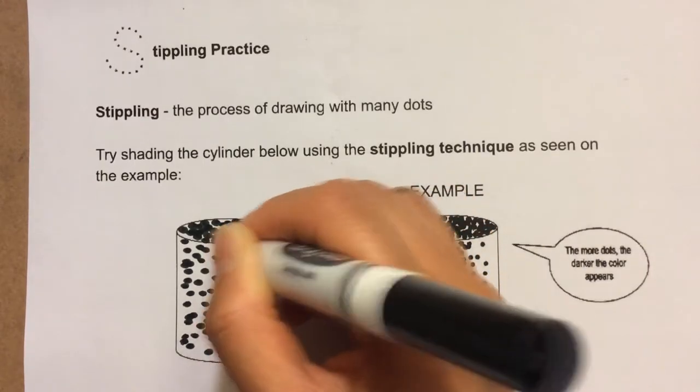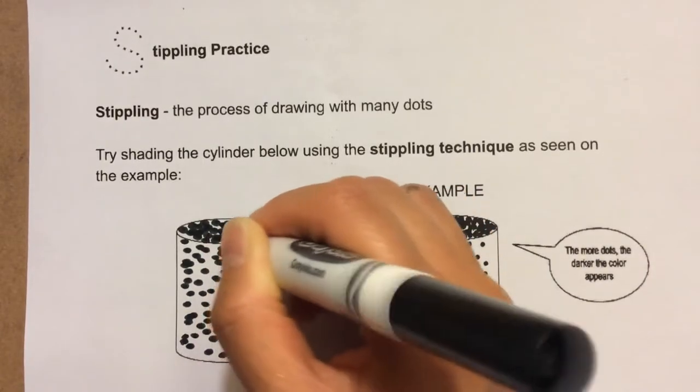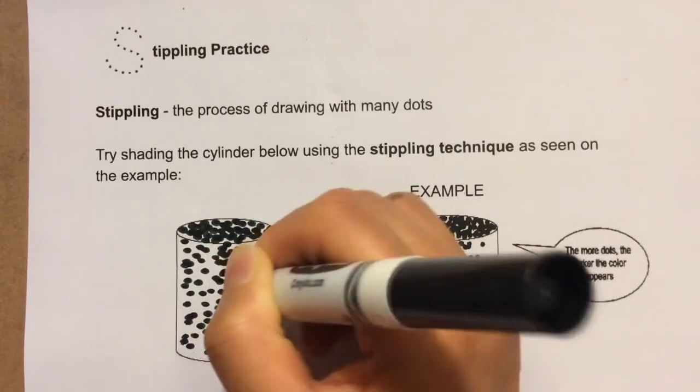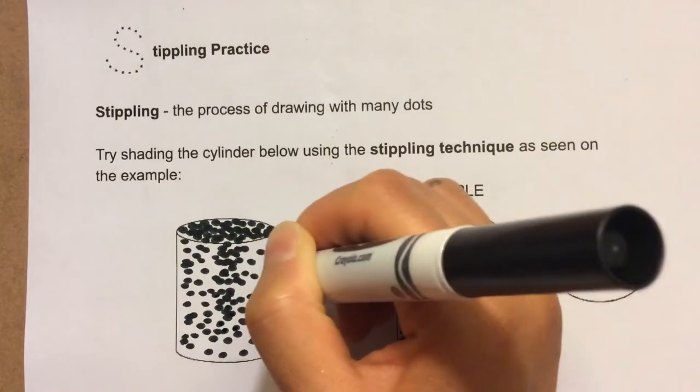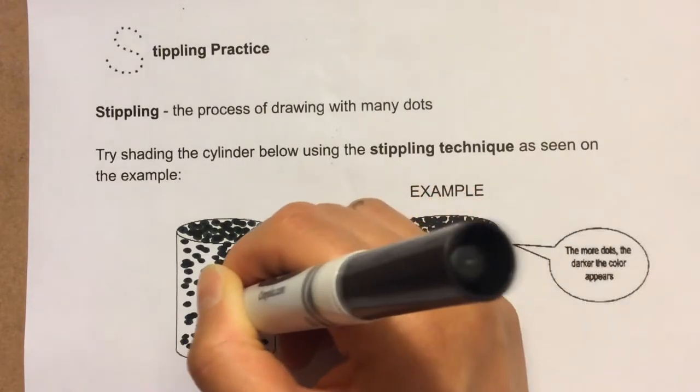And then I'll add some more dots to the middle because that's where the cylinder is turning away from the light. So we have the light coming in here and as the cylinder turns away, we're going to start to see more of a shadow.